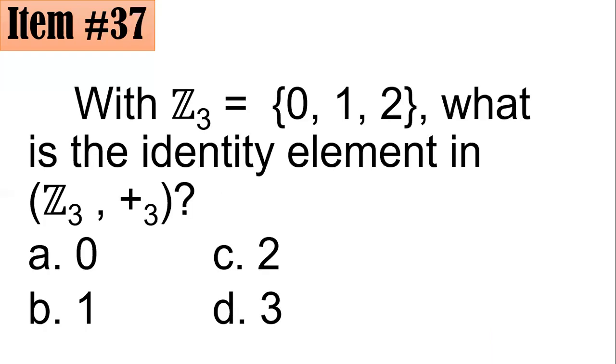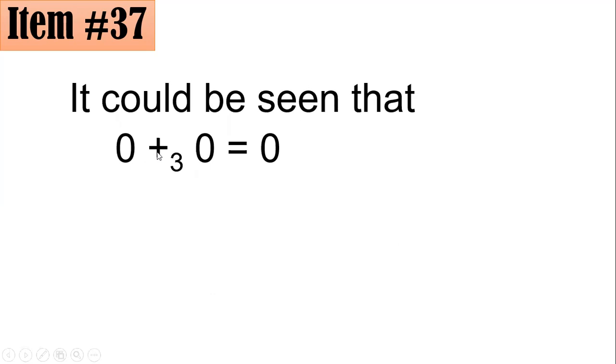Number 37. With Z₃, which is the set of all remainders when you divide an integer by 3, your remainders are 0, 1, and 2. What is the identity element in Z₃ under operation addition modulo 3? When we say addition modulo 3, you will get the remainder upon division by 3.